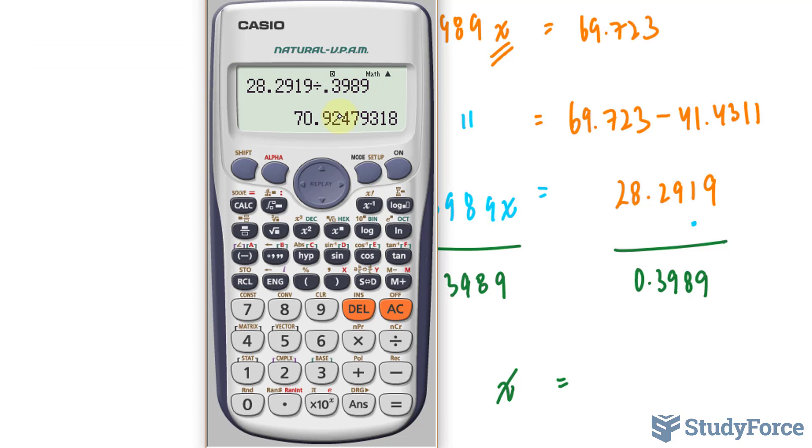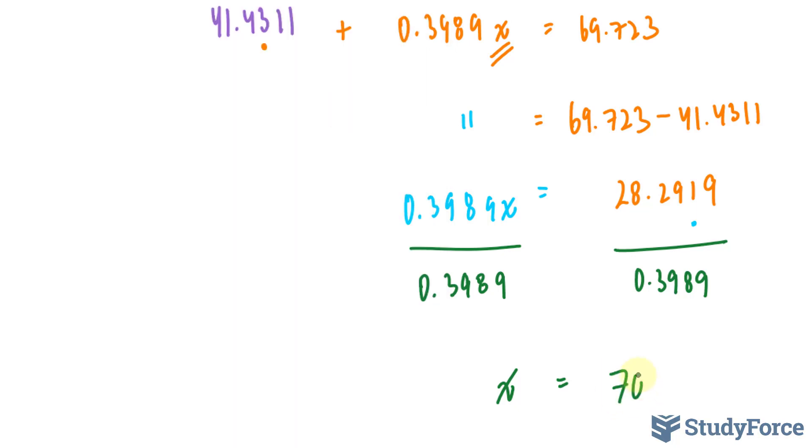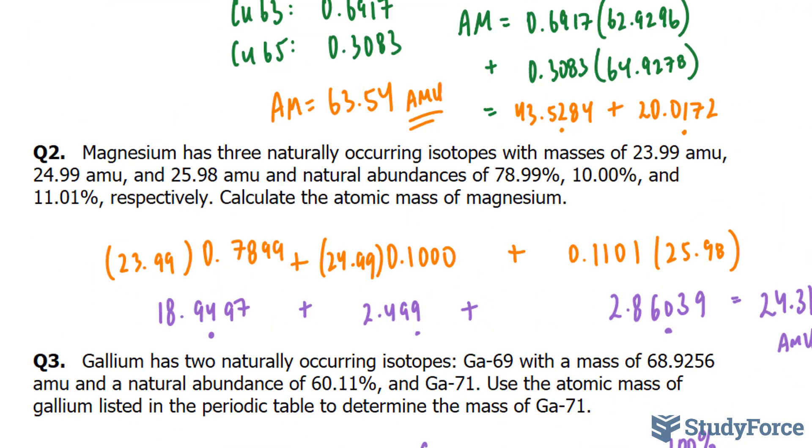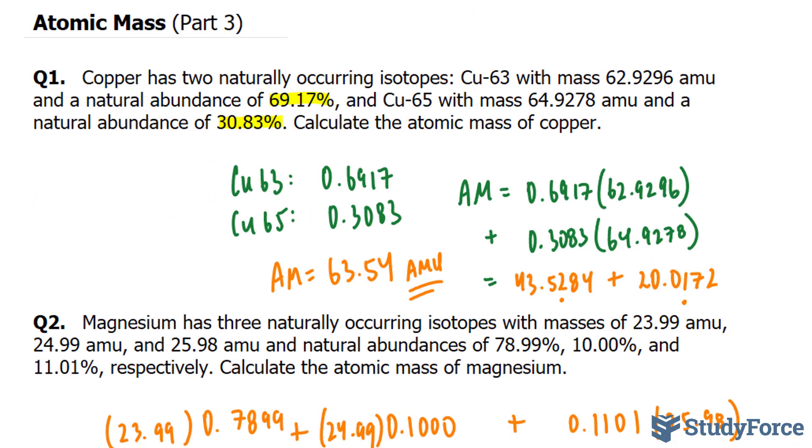And everything after that two is insignificant, and since that four is less than five, we're not going to be rounding up. 70.92 amu of Gallium-71. So there you have it. That is how to calculate atomic mass.